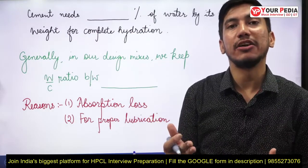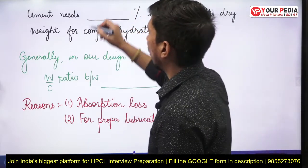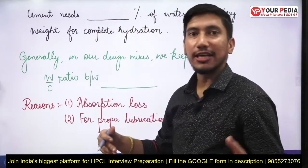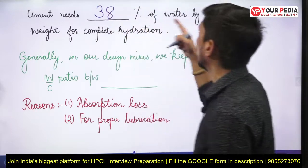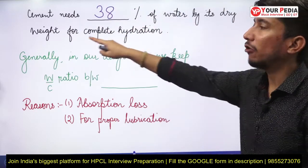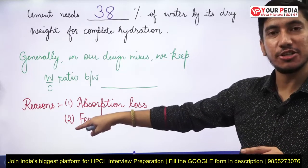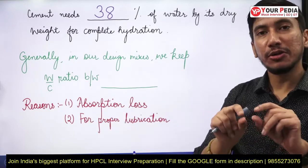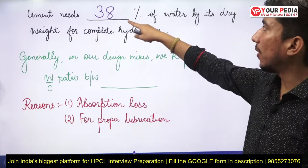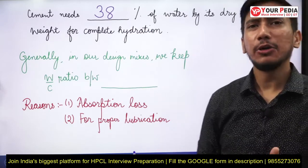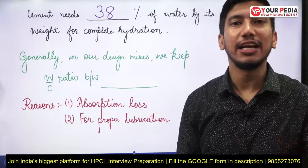How much water does cement require to be fully hydrated? Research has shown that cement needs about 38% water by its dry weight for complete hydration — for that reaction to get fully completed, approximately 38% water is required.